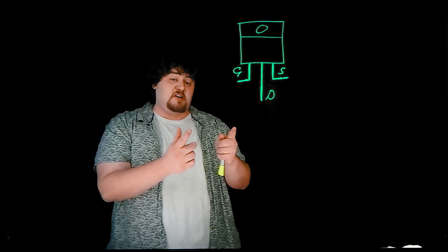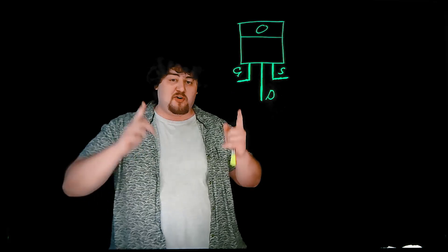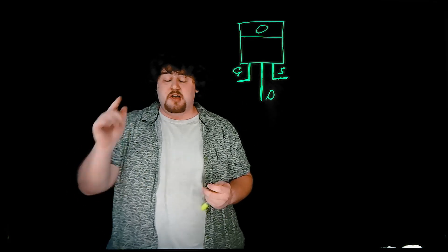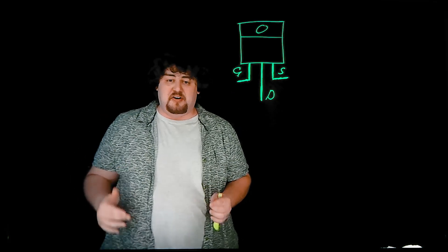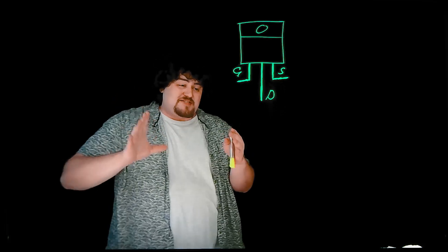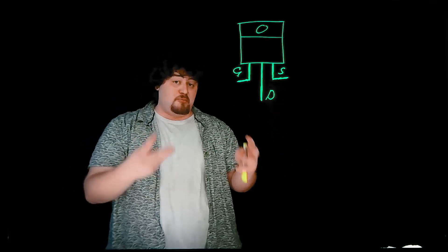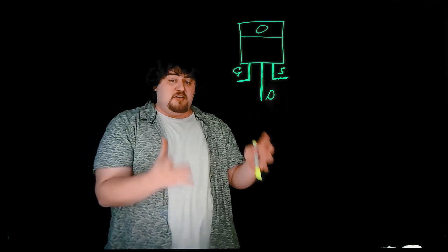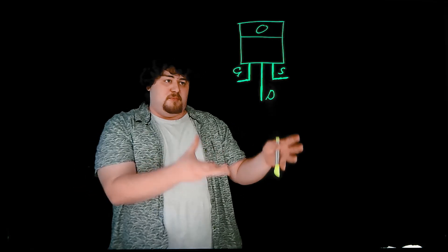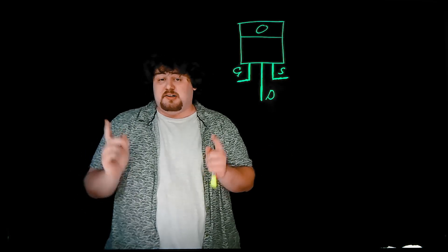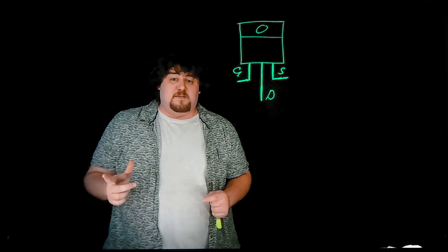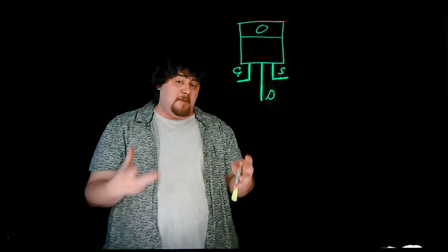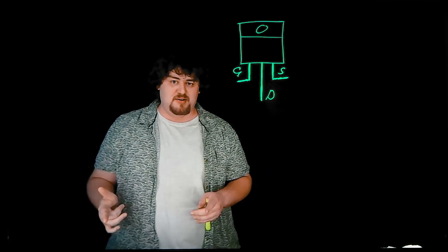This is specific to an N-channel MOSFET, and the exact MOSFET model that we're using — link in the guide below — likes to turn on and allow current to flow at 3.3 or 5 volts, and at 0 volts it'll stop this process. We call this a logic level MOSFET, as this aligns nicely with the output pins of our microcontroller.